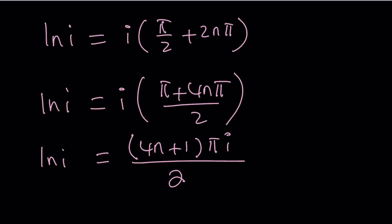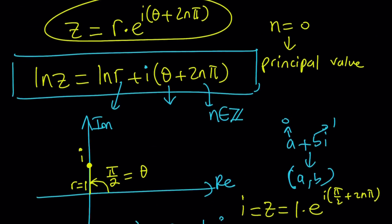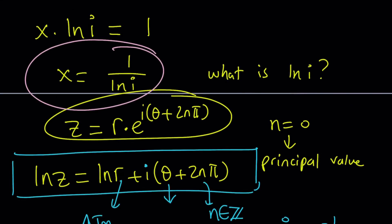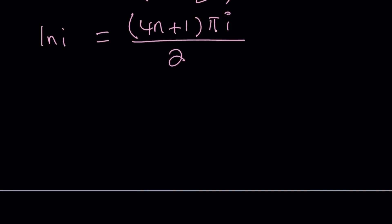But is that the answer? No. Because what is x? x is equal to 1 over ln i. So we basically need to look at the reciprocal. So what is x from here? x is going to be 1 over ln i. And the reciprocal of this expression is just going to be 2 over 4n plus 1 πi.